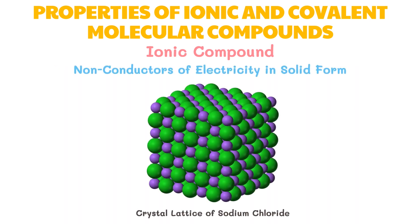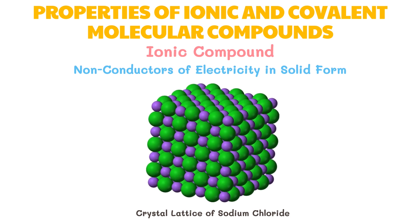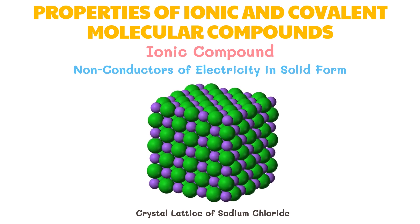Solid ionic compounds do not conduct electricity — instead, they are good insulators. This is because the ions are locked into the crystal lattice and cannot move, so the solid cannot conduct electricity. Only ionic compounds in liquid molten form or aqueous solutions are good electrical conductors. Now let's move on to the properties of covalent compounds.